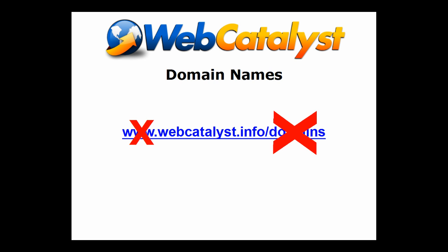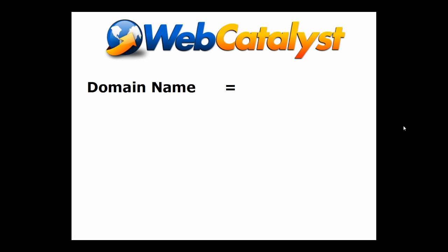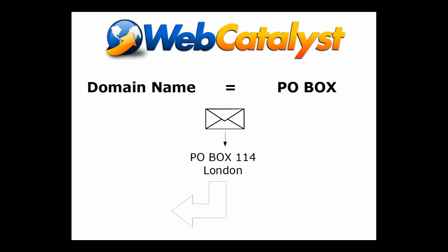It tells the web server which part of the domain you want to load up — but we'll get to that. This bit here is the actual domain name itself. Domain names work kind of like PO boxes. You can register a PO box like 'PO Box 114, London' and give that out to people. Companies do this all the time so they don't have to reveal their physical address. People send mail to the PO box and the mail company forwards it to the real address — so whoever sent the mail doesn't necessarily know the real address.